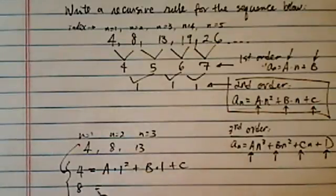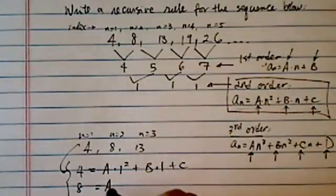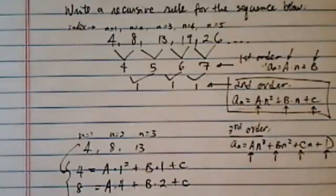And then I have 8 is equal to, let's see what I have, 4a, which is a times 4 plus b times 2 plus c. And then 13 is equal to a times 9, which is 3 squared plus b times 3 plus c.